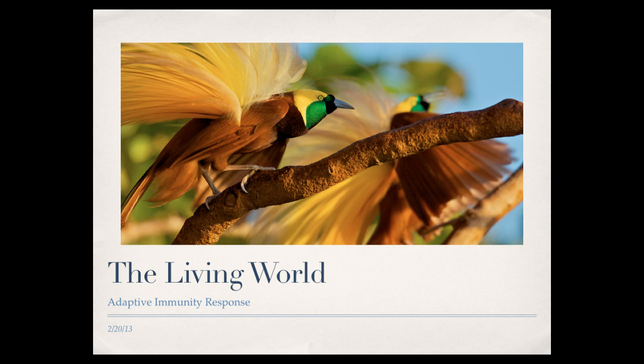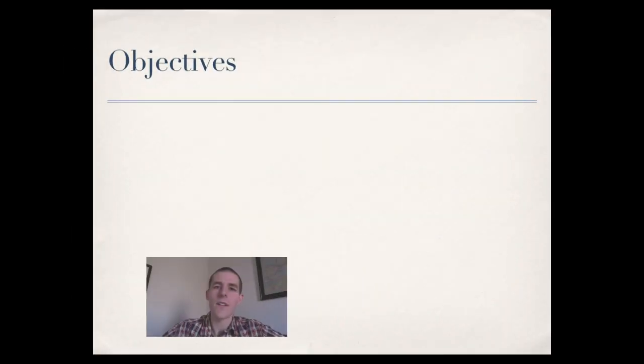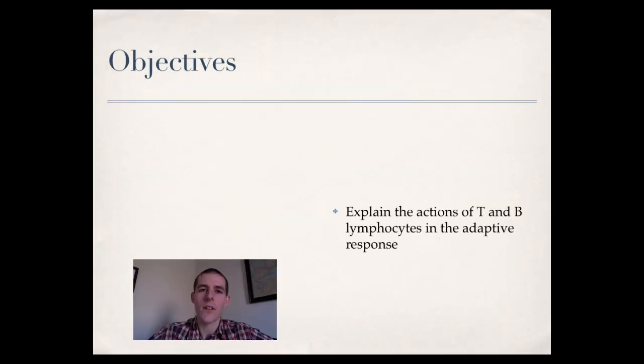Today's topic is going to be the adaptive immune response. Last video we focused on the actual receptors in the cells. Today we're going to talk about them getting their job done. There's only one objective that I need you to be able to accomplish by the end of this video, and that is to explain the actions of T and B lymphocytes in the adaptive response. Remember, lymphocyte is another word for white blood cell or T cell or B cell, just kind of general.